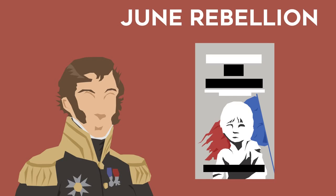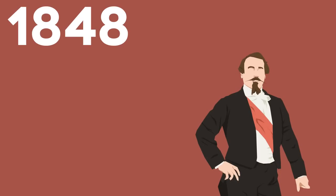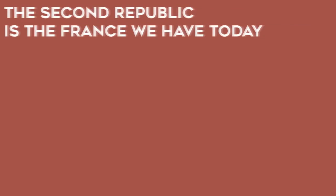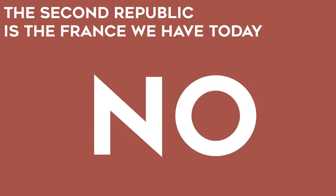For the third revolution, we'll have to go to 1848, which removed the monarchy and introduced the Second Republic, and had the popular election of Napoleon's nephew, Napoleon III. The Second Republic is not the France we have today — because old habits die hard, and in 1851 Napoleon III declared himself Emperor.